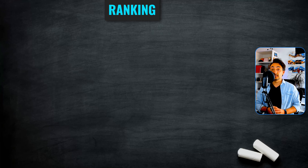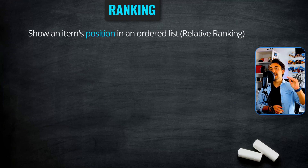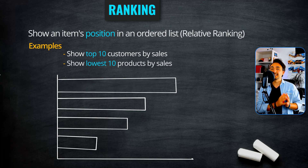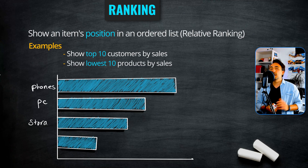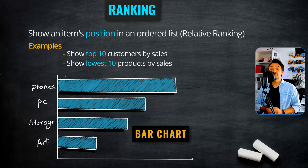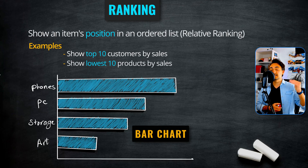Next we have the ranking category. We use it when the most important thing to show is the position of items in a sorted list. For example, showing the top 10 customers by sales or the lowest 10 products by sales. The best charts in this category are bar charts, which are amazing for building sorted lists and comparing different ranks together.